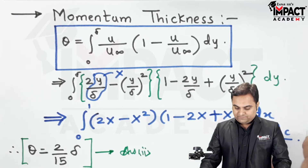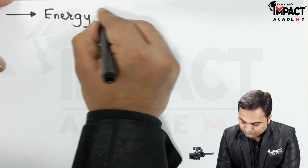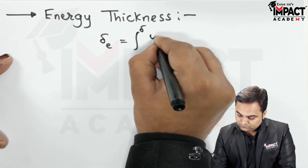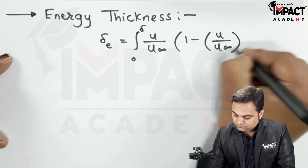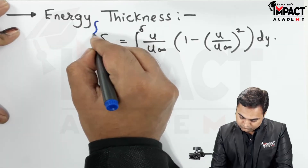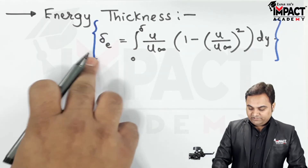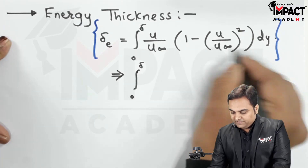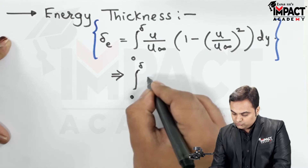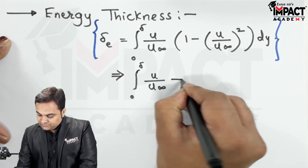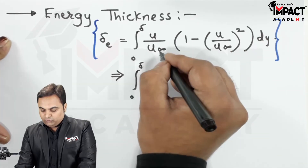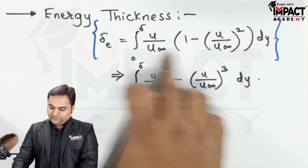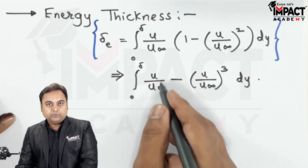Finally, we have to find the energy thickness. Using its formula, I simplify by multiplying u/u∞ inside: the expression becomes u/u∞ − (u/u∞)³. Then substituting u/u∞ = (2y/δ − (y/δ)²), which gives a cubic term.